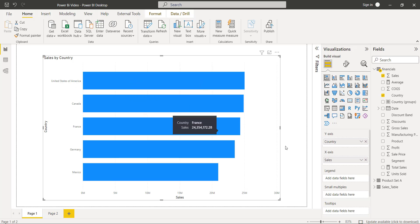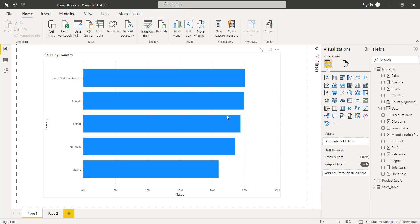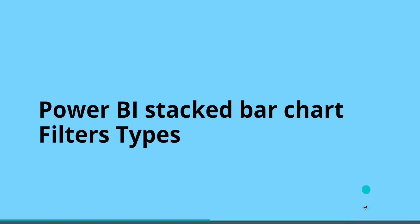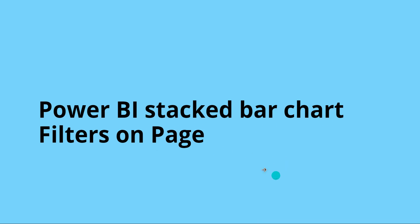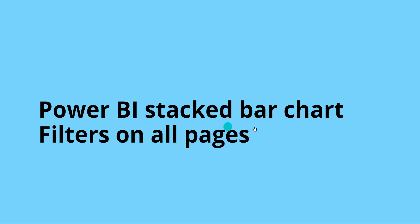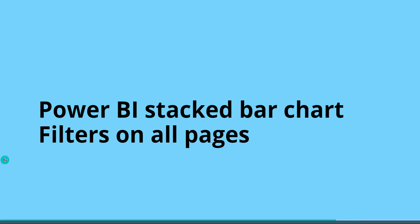The stacked bar chart visual now displays the sales value by country. When you hover on it, it displays the country name and the sales value in the tooltip. Now to apply filters, we will see what are the different types available. There are three different filter types: filters on visual, filters on page, and filters on all pages.